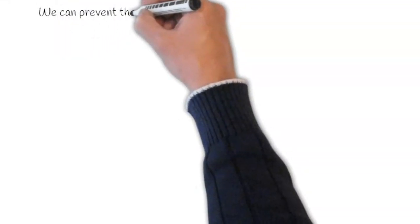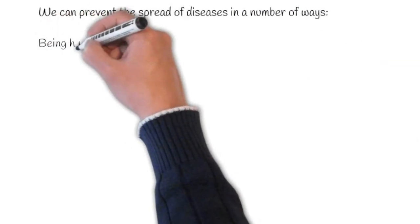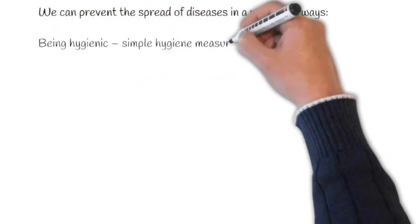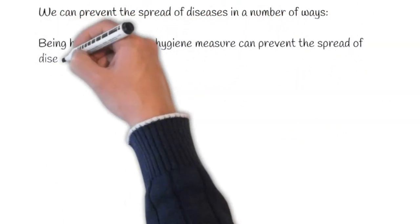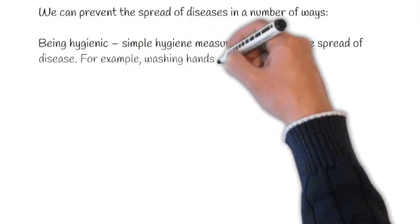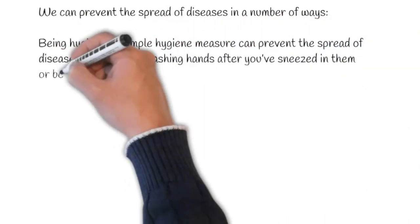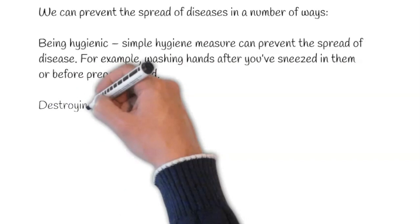We can prevent the spread of disease in a number of ways. The first of which is being hygienic. Simple hygiene measures can prevent the spread of disease. For example washing hands after you've sneezed in them or before preparing food.